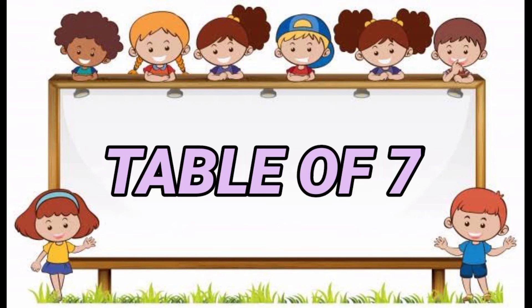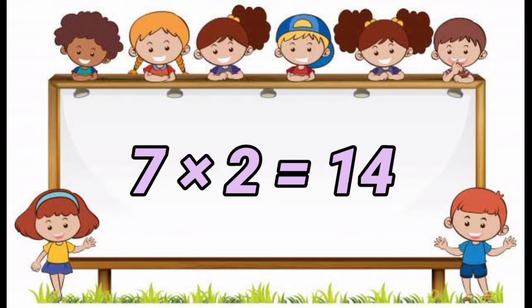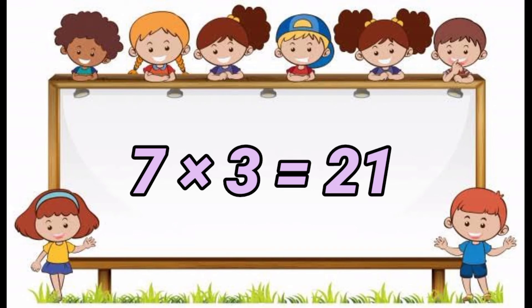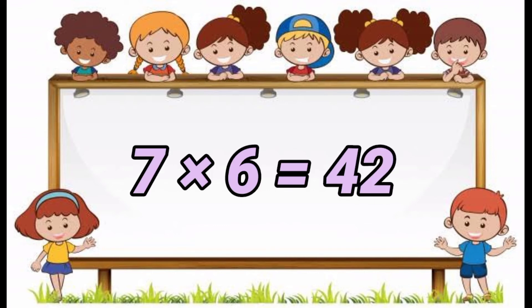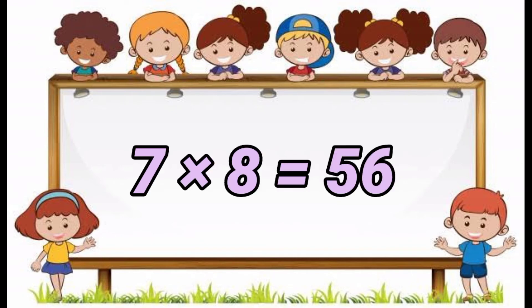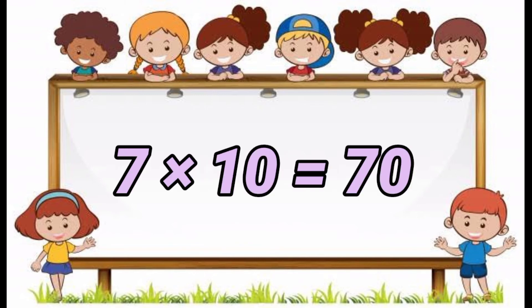Table of 7. 7 1's are 7. 7 2's are 14. 7 3's are 21. 7 4's are 28. 7 5's are 35. 7 6's are 42. 7 7's are 49. 7 8's are 56. 7 9's are 63. 7 10's are 70.